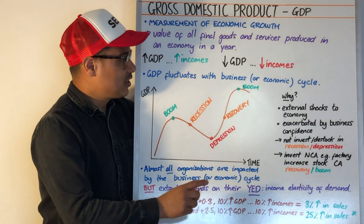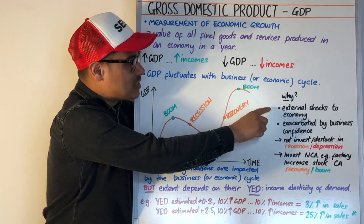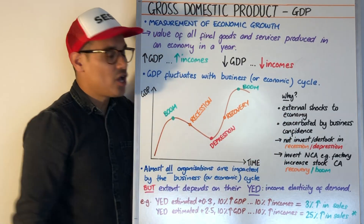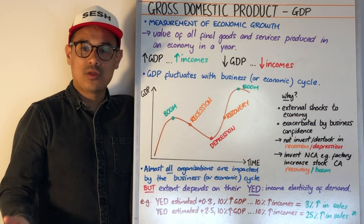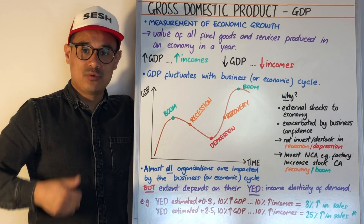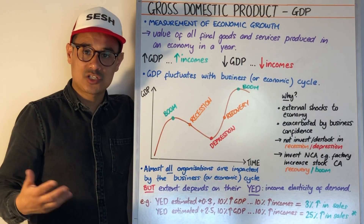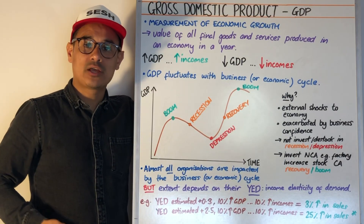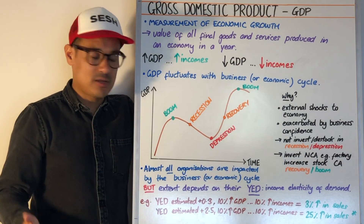The business cycle exists because of external shocks to the economy. Think about ones that have happened in recent years: we've had the 2008 credit crisis, we've had Brexit — a smaller shock — and we've had a larger shock in terms of coronavirus, the pandemic in 2020.